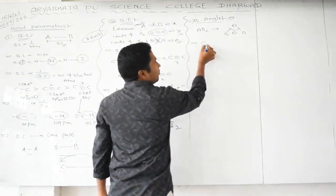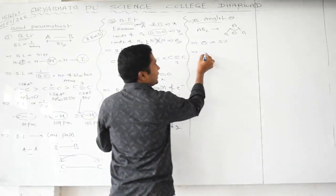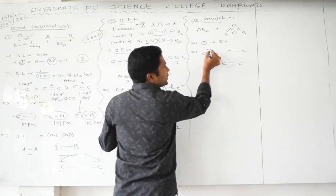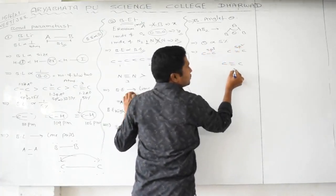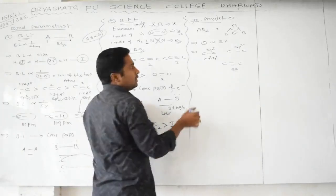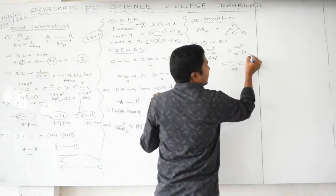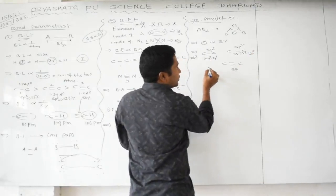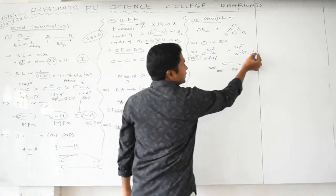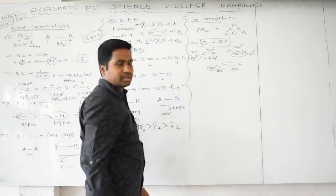Bond angle is directly proportional to s-character percentage. For sp³ hybridization, s-character is 25% and bond angle is 109°28'. For sp² hybridization, s-character is 33.33% and bond angle is 120°. For sp hybridization, s-character is 50% and bond angle is 180°. As s-character percentage increases, bond angle also increases.